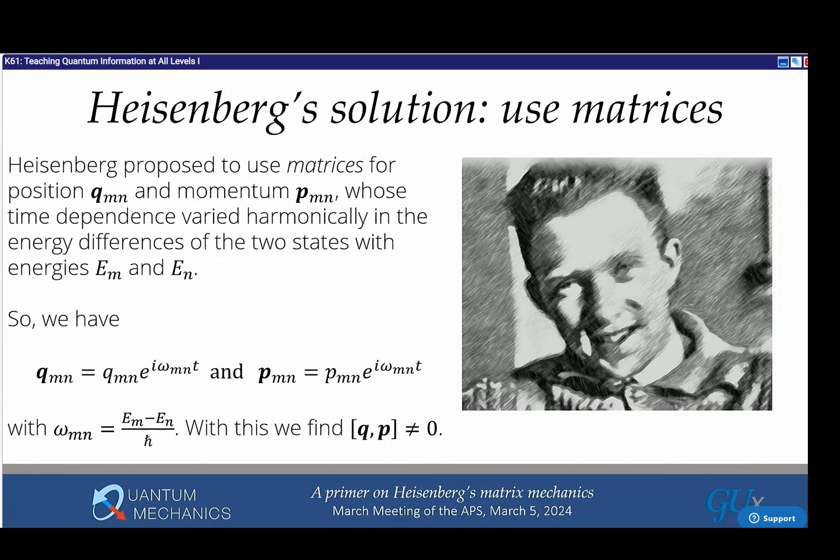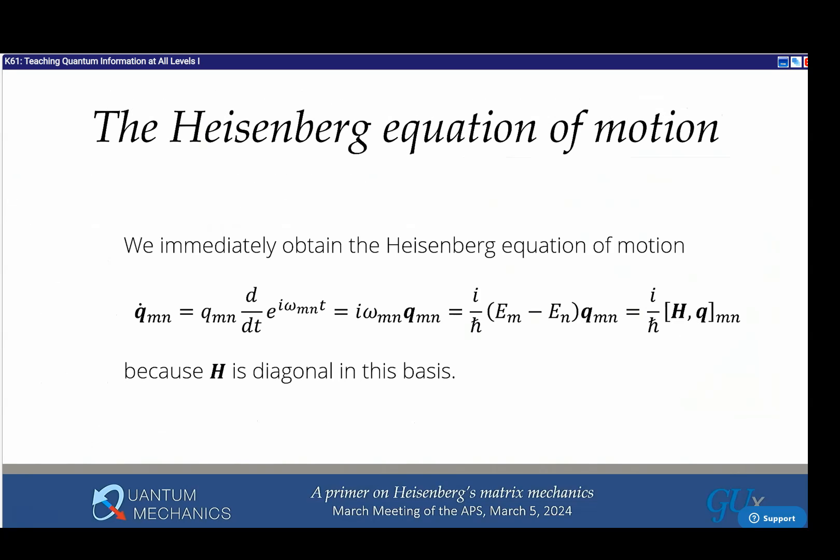If I take a matrix for position Q_mn and one for momentum P_mn, where the mn dependence depends on the energies E_m and E_n as e^(i*ω_mn*t), where ω_mn is the energy difference divided by h-bar, I'm going to show you that just from that assumption you will find the canonical commutation relation equals exactly i*h-bar.